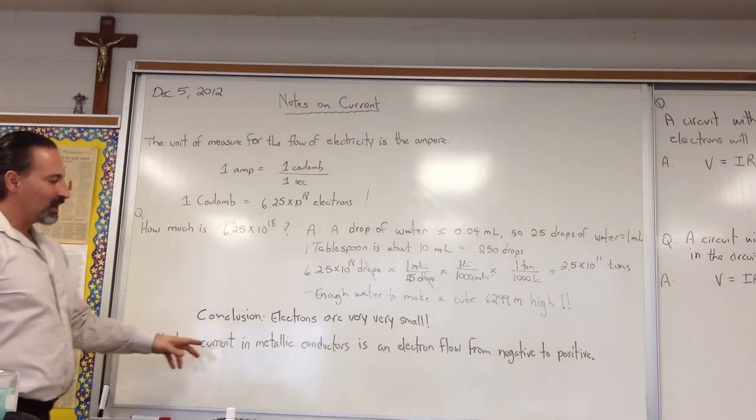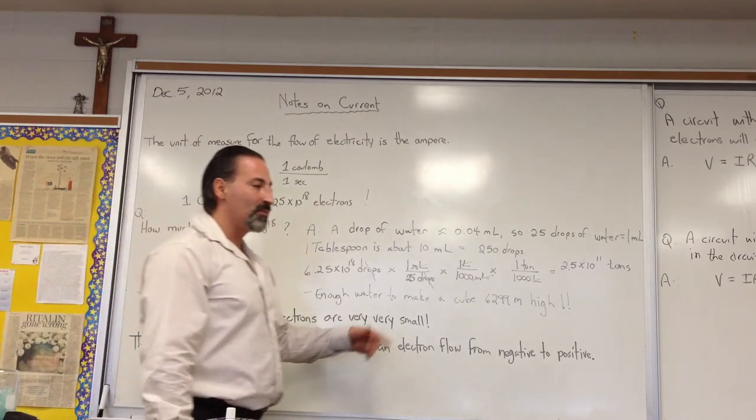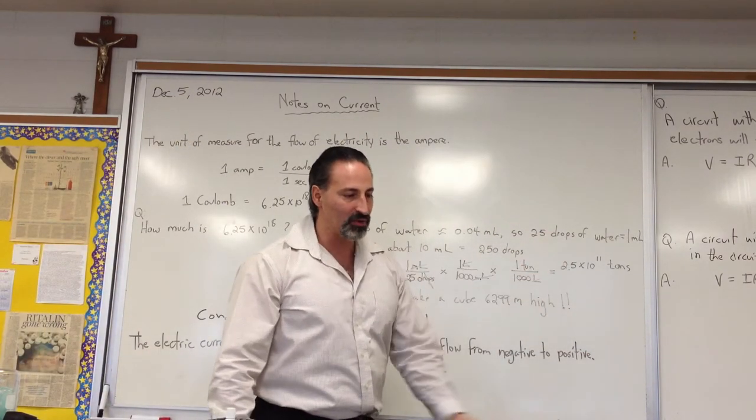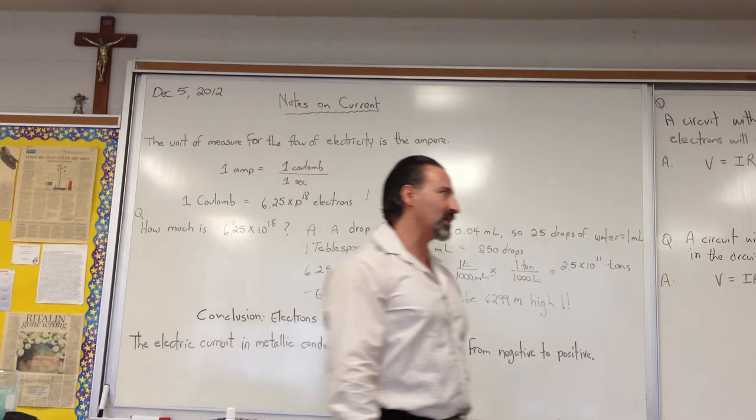The electric current in a metallic conductor is an electron flow from negative to positive, as we've seen before. It comes out of the negative side of the battery, flows through the wire, and it goes back into the positive side of the battery.